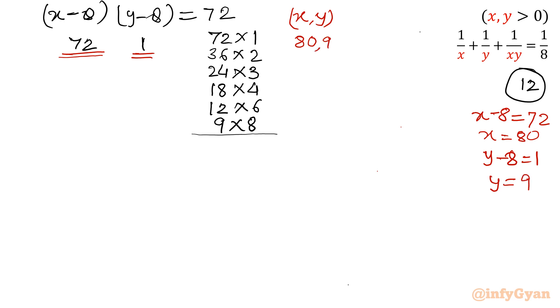For 72 to 1, means 72 for (x-8) and for (y-8) it is 1. Similarly for 36 by 2, you will add 8, 44 and 10.